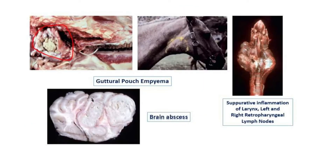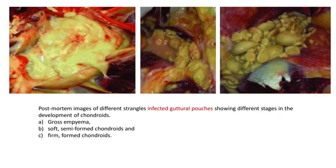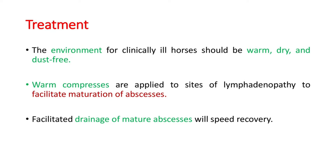Different lesions caused by strangles include guttural pouch empyema, brain abscess, suppurative inflammation of the larynx, and left and right retropharyngeal lymph nodes. Postmortem images of strangles-infected guttural pouches show different stages in the development of chondroids: gross empyema, soft semi-formed chondroids, and firm formed chondroids.